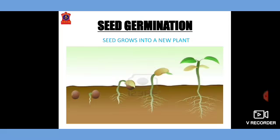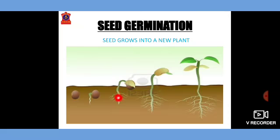Seed germination. It is the process in which a seed grows into a new plant. A seed is placed in moist soil. When conditions are right, the seed starts taking in water and gets bigger. Then the root comes out first and grows into the soil, fixing the baby plant and absorbing nutrients. Then the shoot comes out and starts to grow towards the sun. The first pair of leaves formed are known as cotyledons, and the young plant is also known as a sapling.